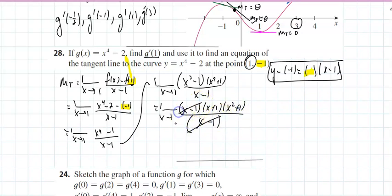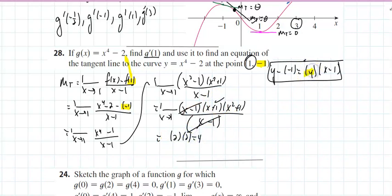Factoring again: (x minus 1)(x plus 1)(x² plus 1) all over (x minus 1). Those cancel out. If I throw 1 in, I'll get 2 times 2, which is 4. Put a 4 in there — there's my answer.